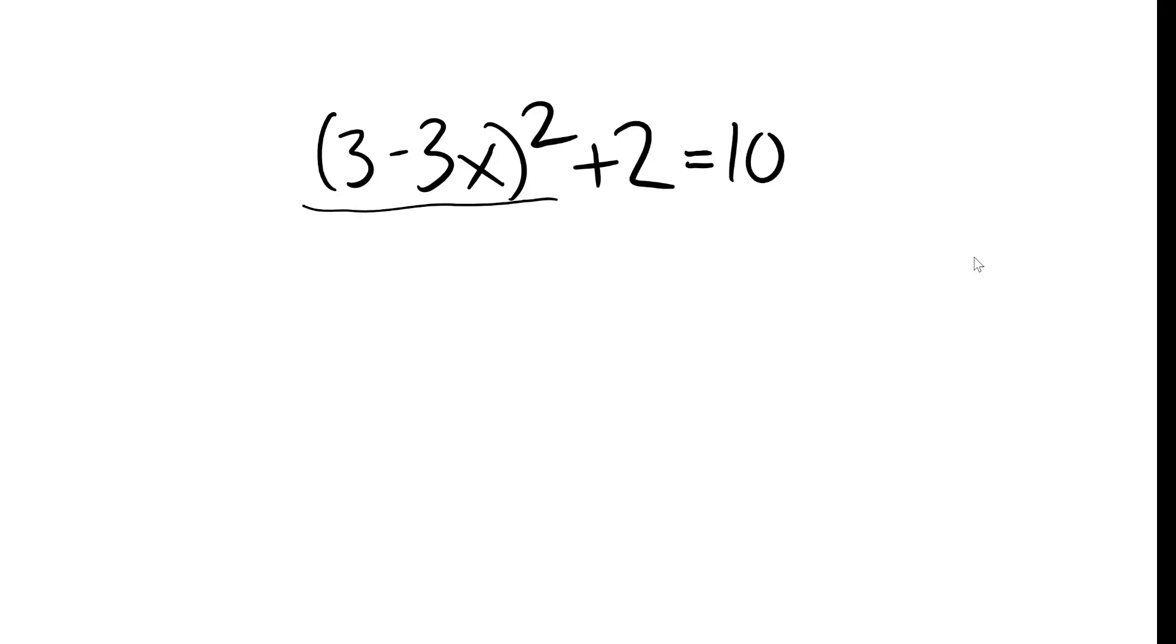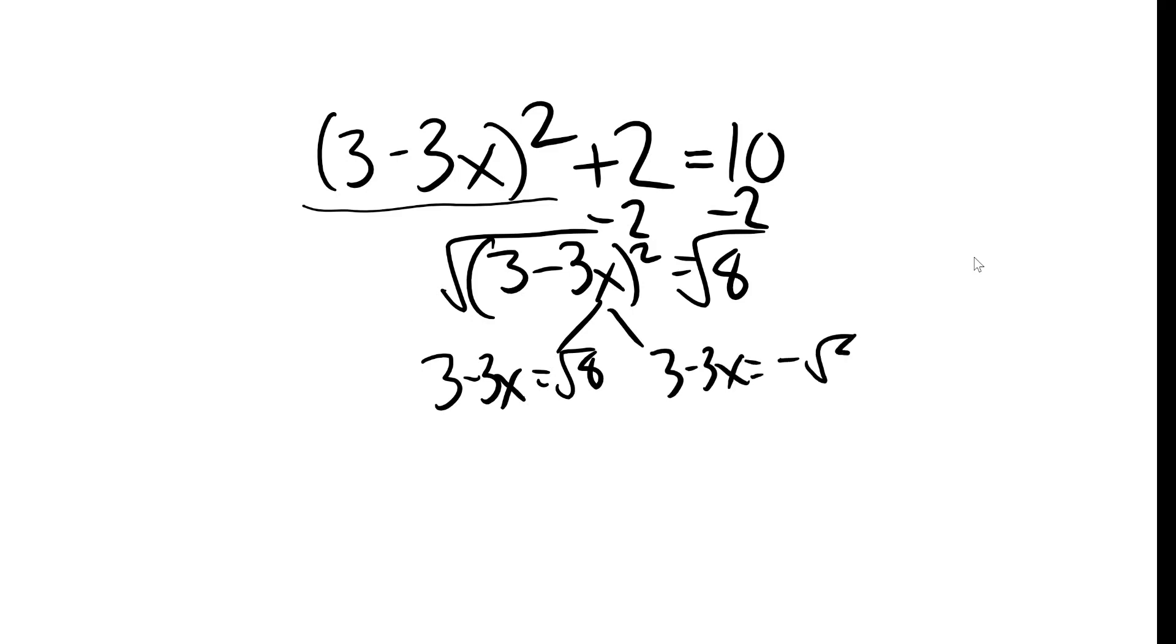So I got to get the parentheses squared by itself in order to square root both sides. So easy money, just subtract 2. Now I got to get rid of the square roots. So I square root both sides. I get 3 minus 3x equals the square root of 8. And 3 minus 3x equals the negative square root of 8.